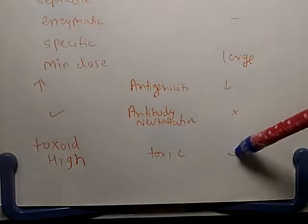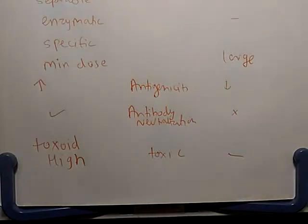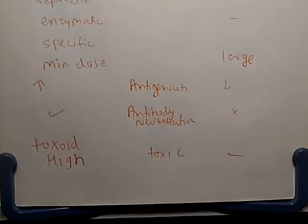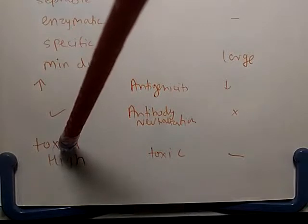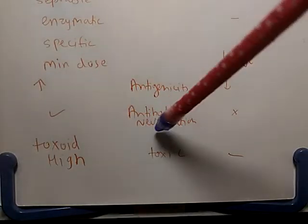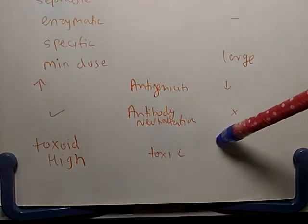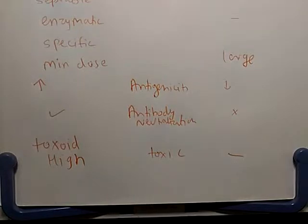Toxicity: exotoxins are highly toxic and endotoxins are moderately toxic. Another thing is toxoid. We can prepare toxoid of exotoxin by treatment with formaldehyde, but we cannot produce toxoid of endotoxin. Another thing I forgot here is pyrogenicity.